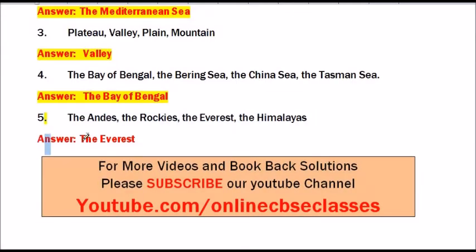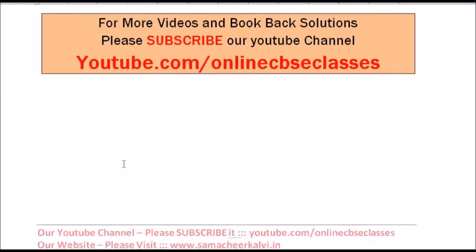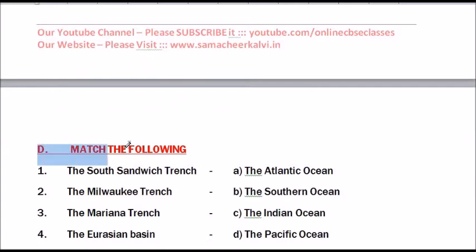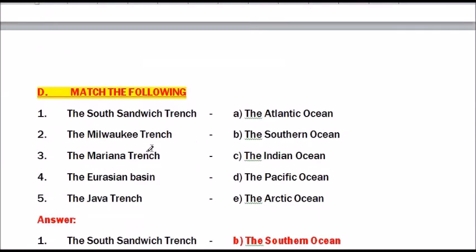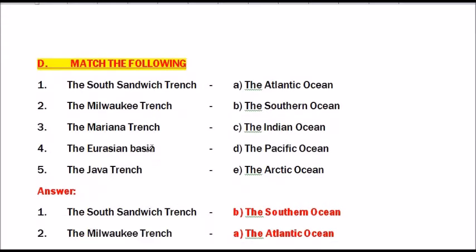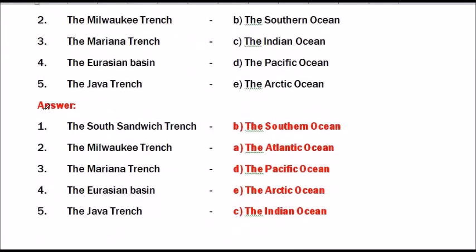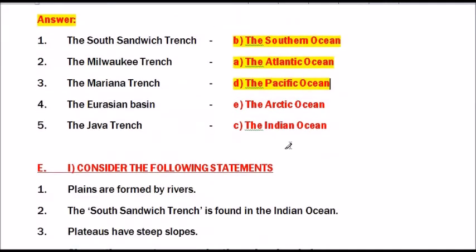Question D: Match the following. South Sandwich Trench – Atlantic Ocean. The Milwaukee Trench – Southern Ocean. Marina Trench – Pacific Ocean. Eurasian Basin – Arctic Ocean. Java Trench – Indian Ocean.